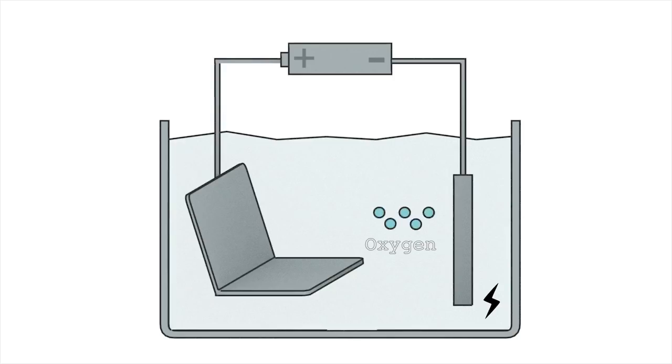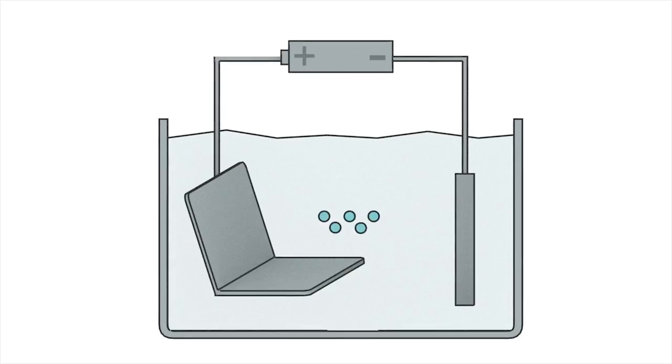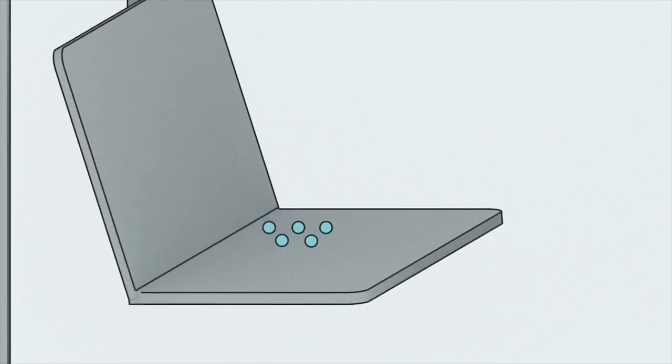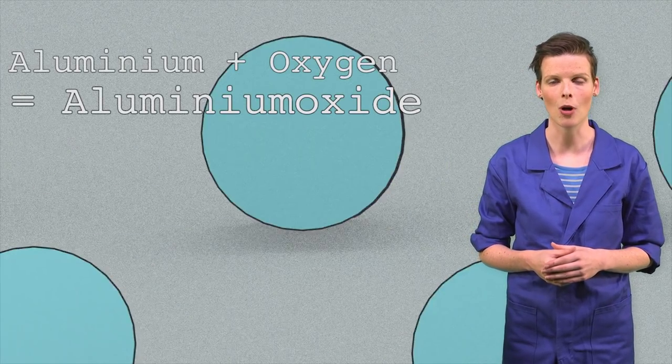The liquid contains oxygen, which is negatively charged. The laptop is positively charged. Positive attracts negative, so the oxygen will move into the direction of the aluminum of the laptop case. The oxygen reacts with aluminum and forms aluminum oxide.